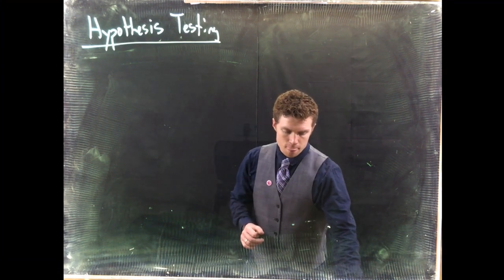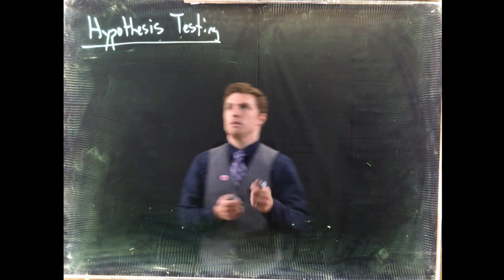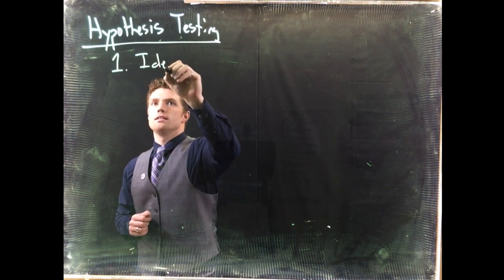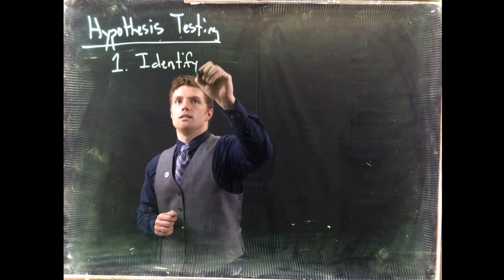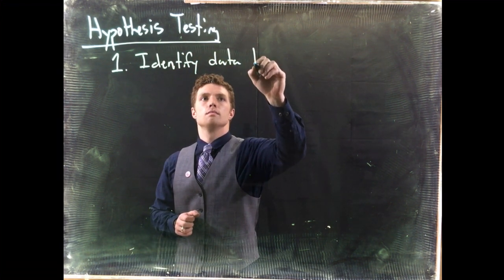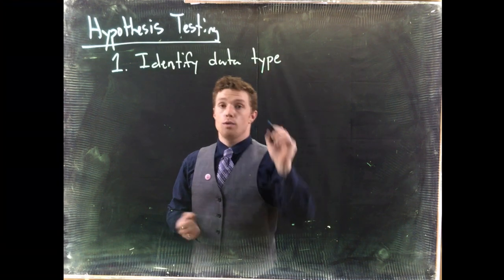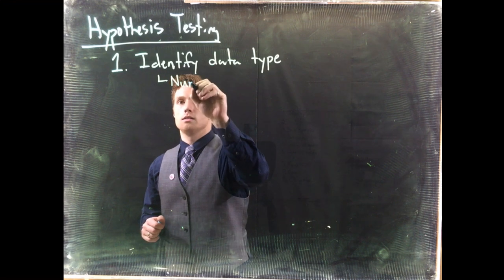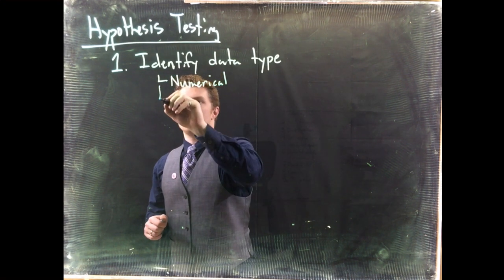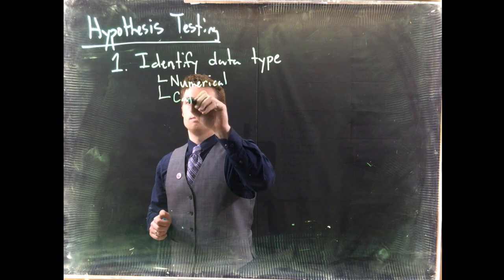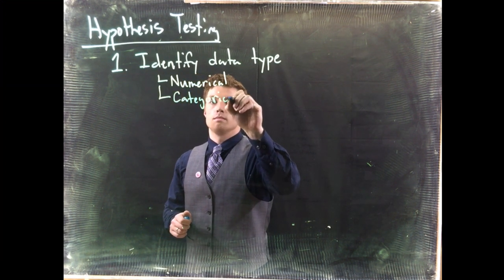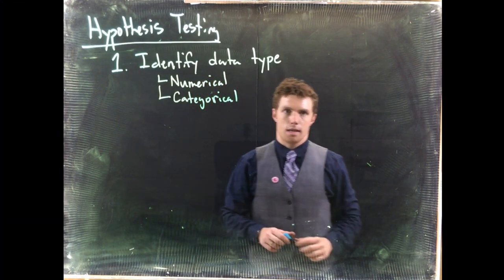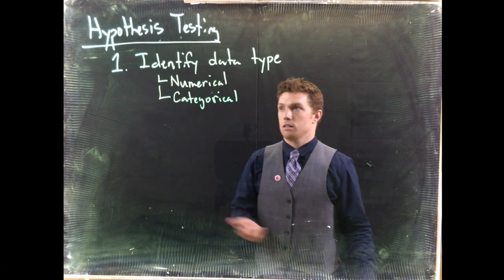Step number one should already be familiar: identify the data type. We've got two types of data we're working with — it's either going to be numerical or it's going to be categorical. Those are our two options: numerical or categorical. That's step number one.